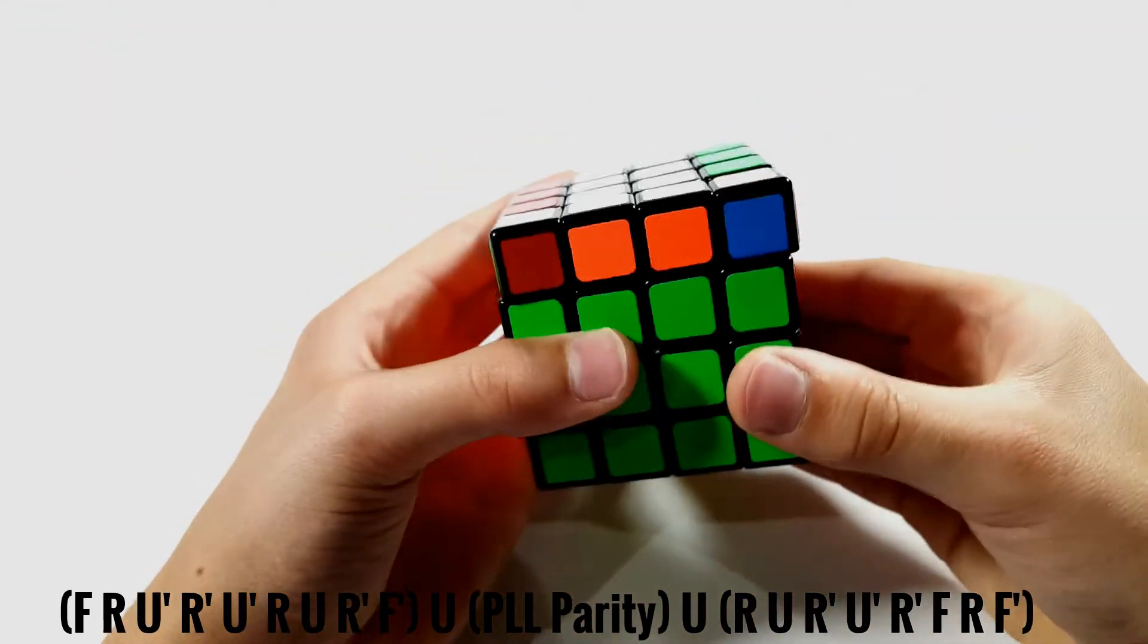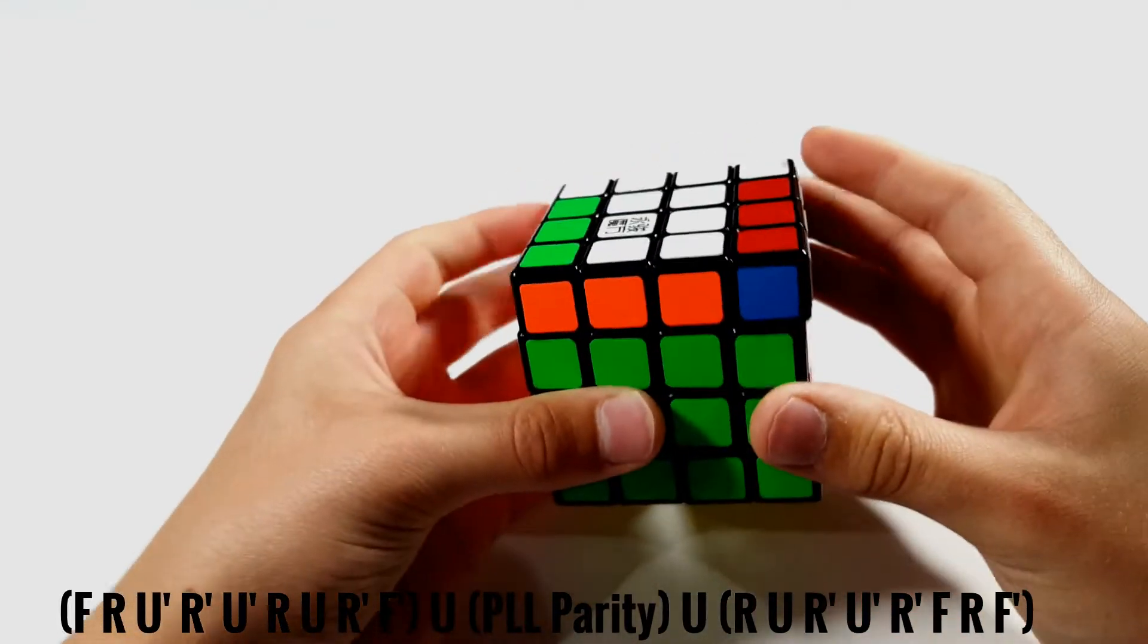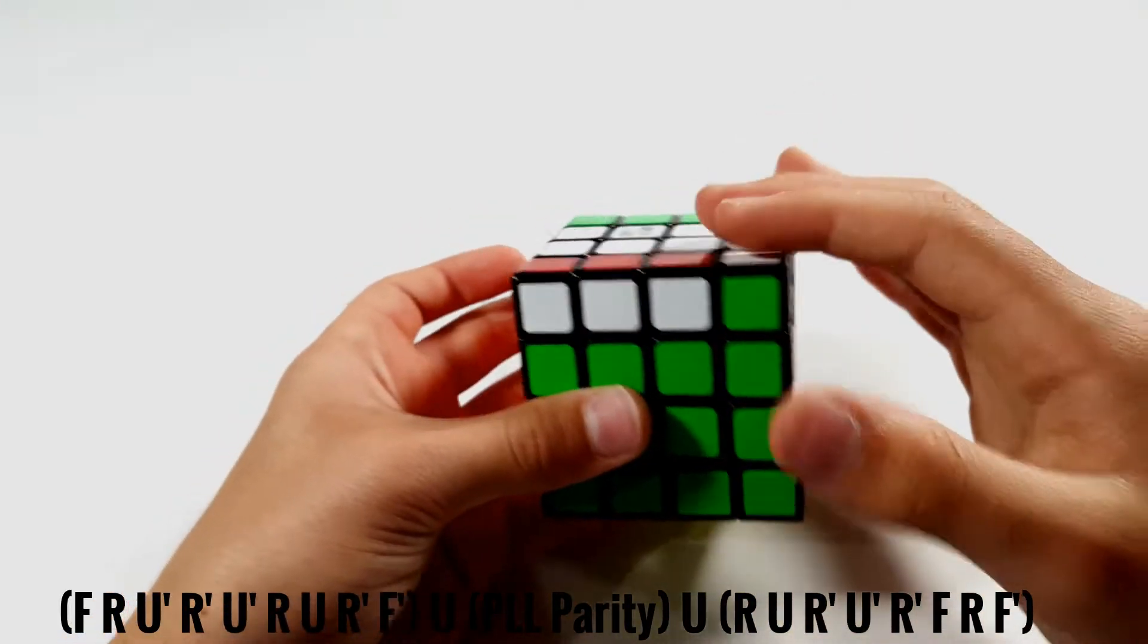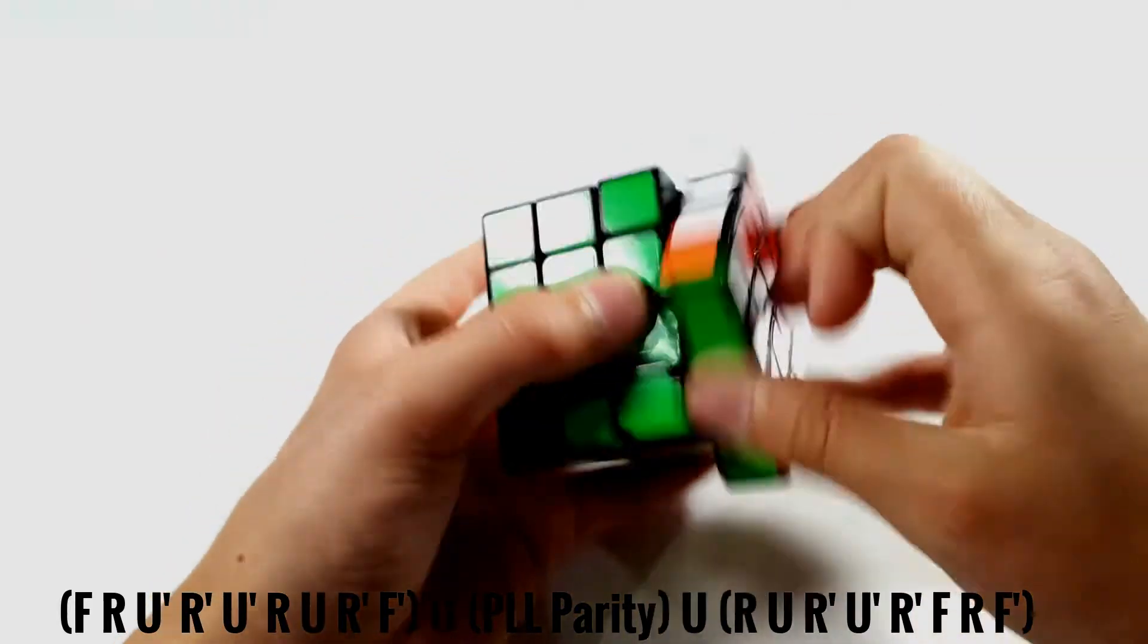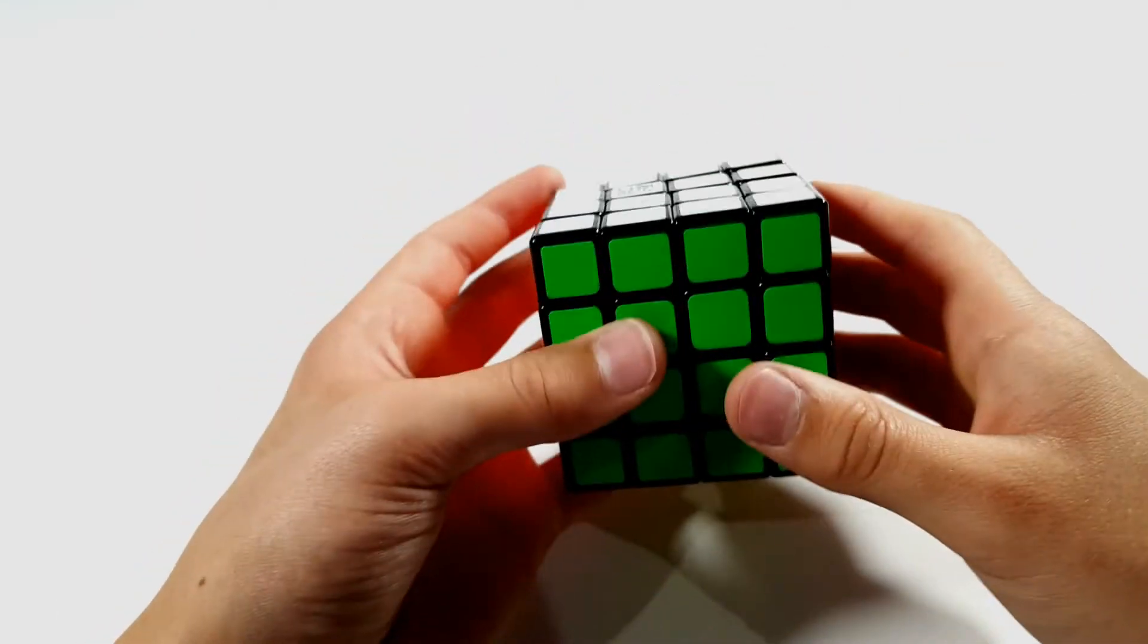Then you do a U, and do your standard PLL parity algorithm. Then you do another U, and solve this OLL on top, which is also just the end of the Y perm. So a nice and simple algorithm.